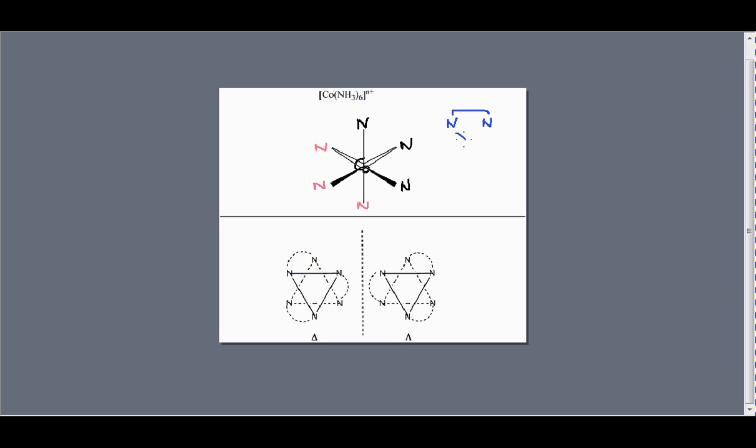And so we describe this as bidentate because each nitrogen lone pair of electrons can join to the central metal atom. And so they could bridge across metal, across a 90 degree angle. So we'll join them up in a fashion such as this, and to that one, and to this one. And you'll notice that the way I've drawn it, I've always gone across a 90 degree angle.